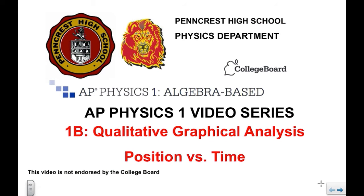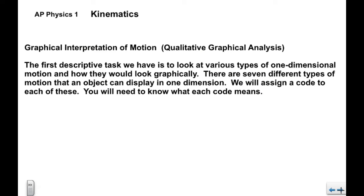Greetings once again. This is the Pencrest AP Physics 1 video series, video 1B. It's a qualitative graphical analysis of position versus time. The first thing we're going to do is look at various types of one-dimensional motion and how each one would look graphically.